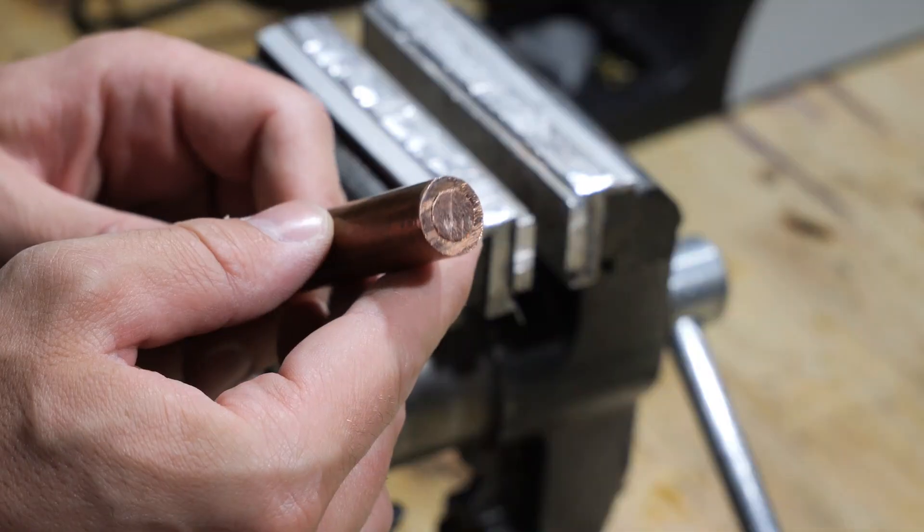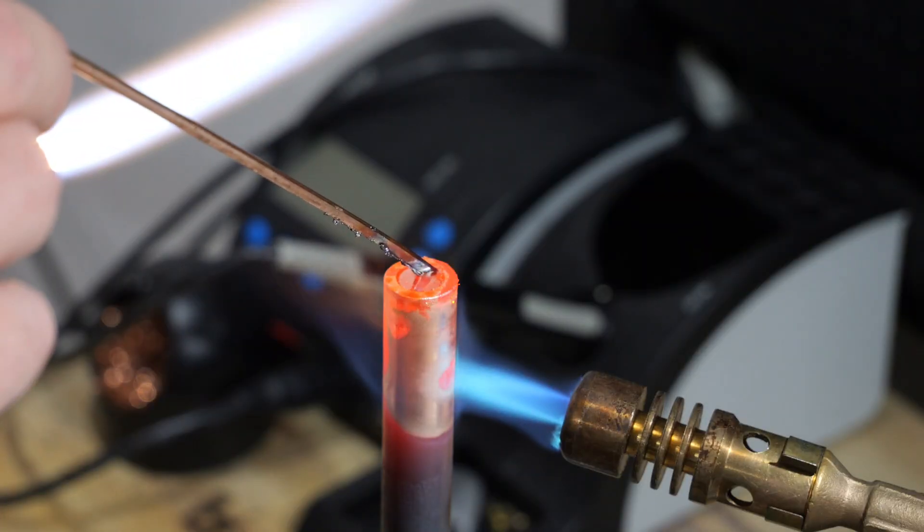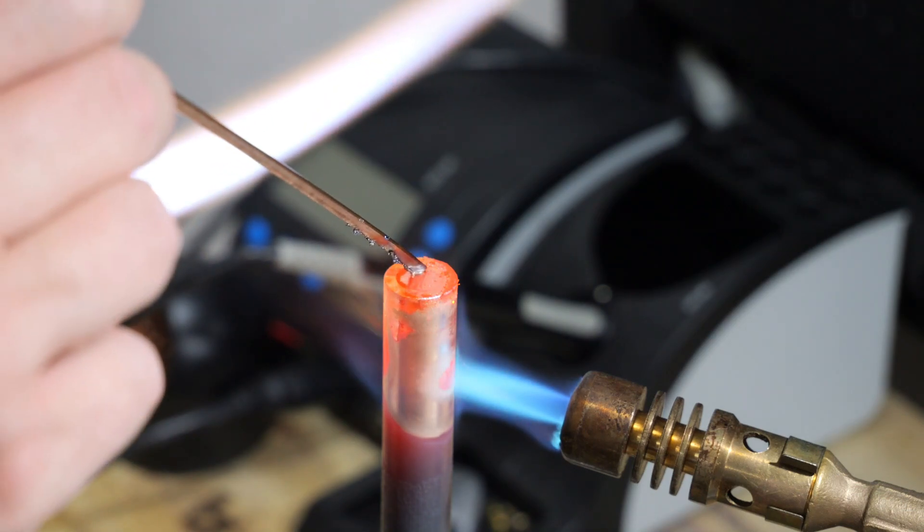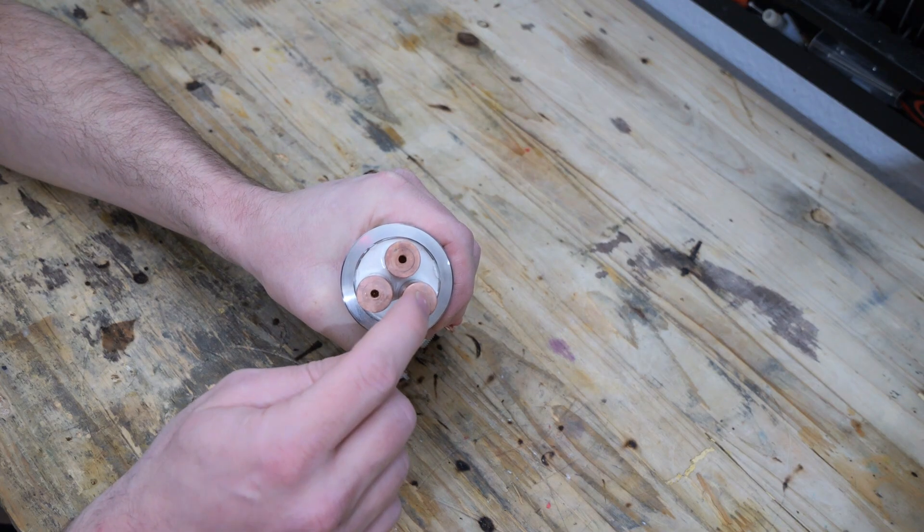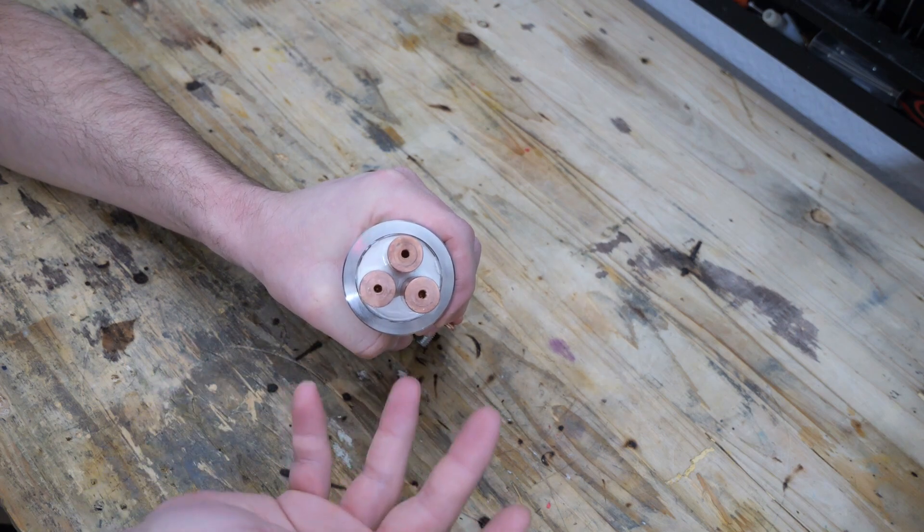And I just used solid copper rods, inserted them in this end here about 2cm I think and brazed them on. I then drilled holes in each of them, tapped them and this way I will be able to attach something on there in my vacuum chamber.